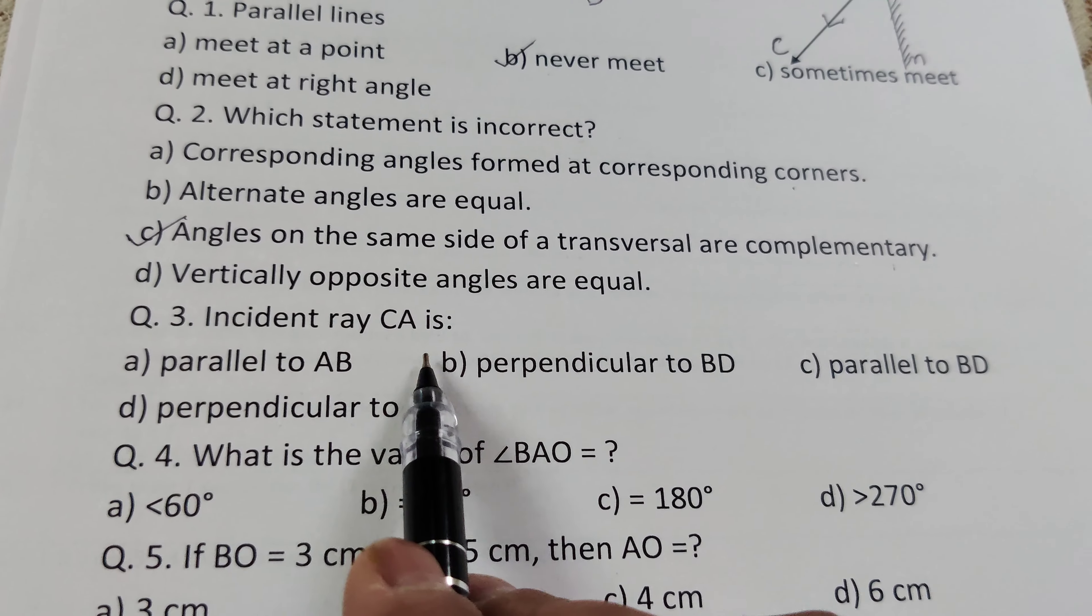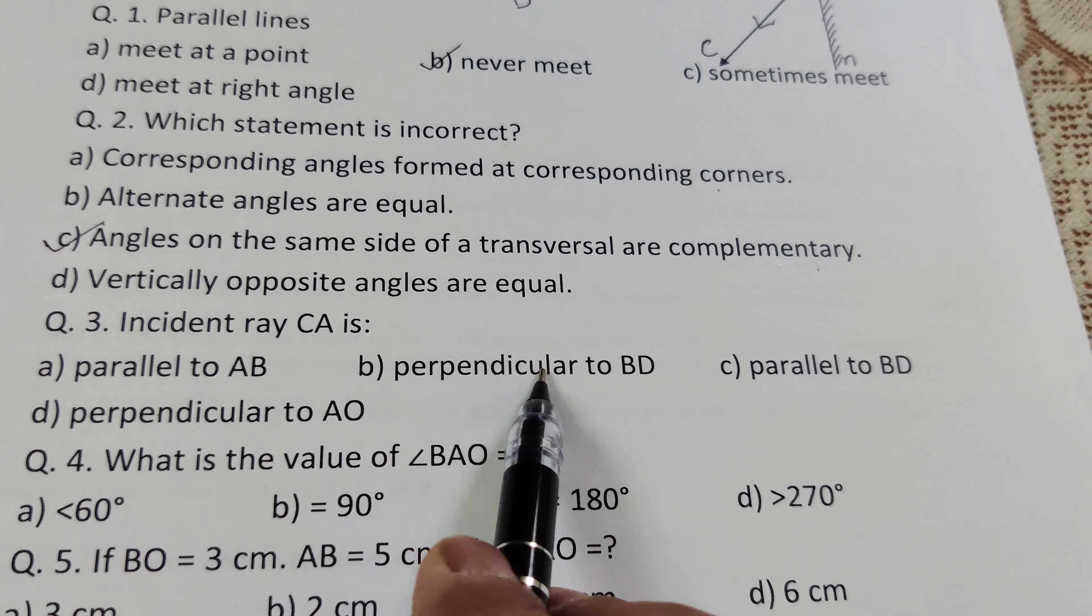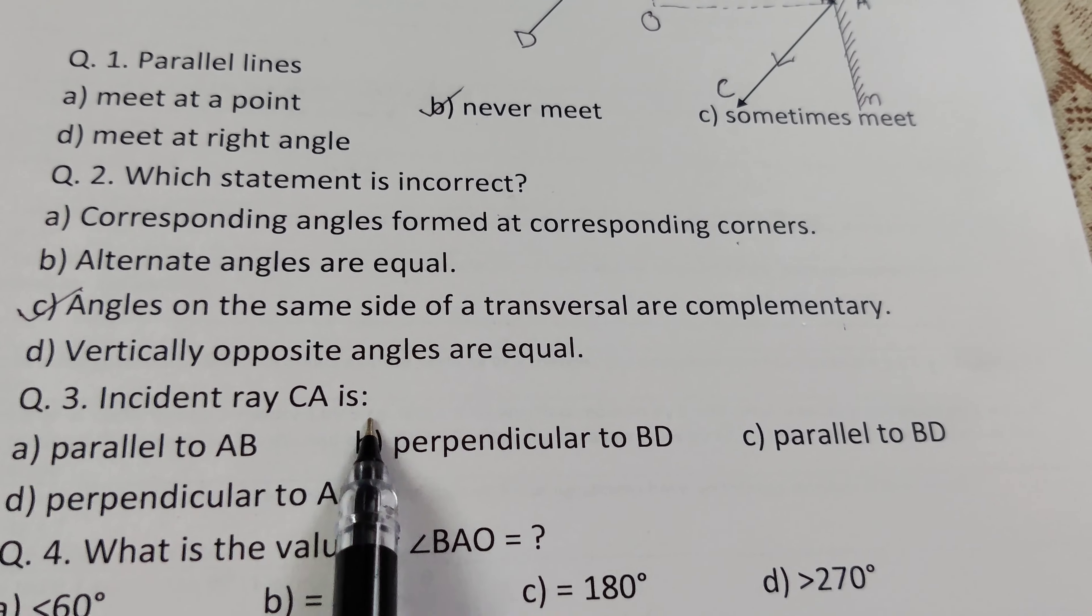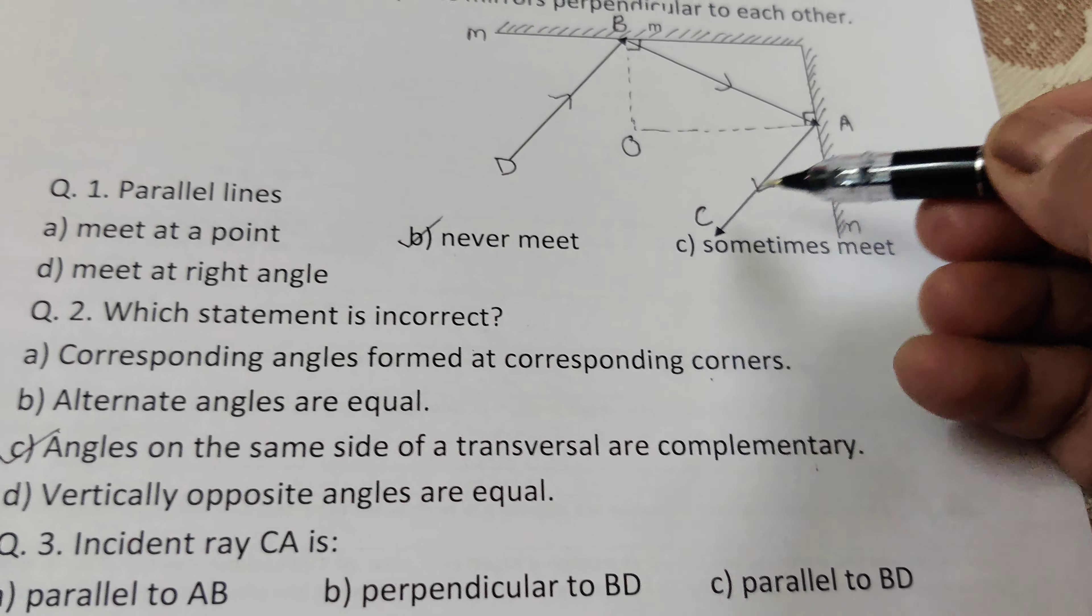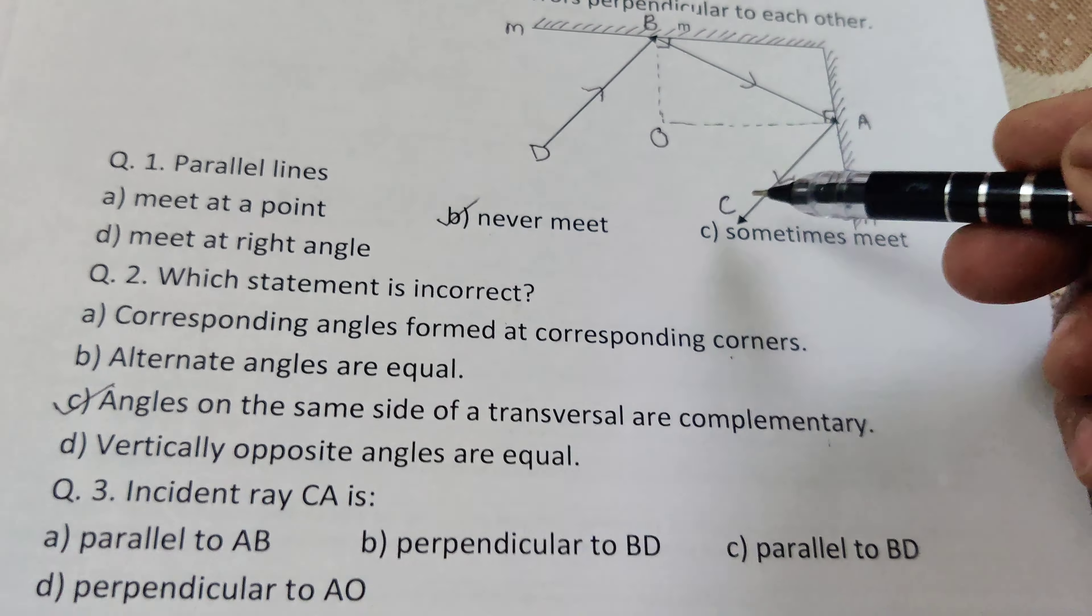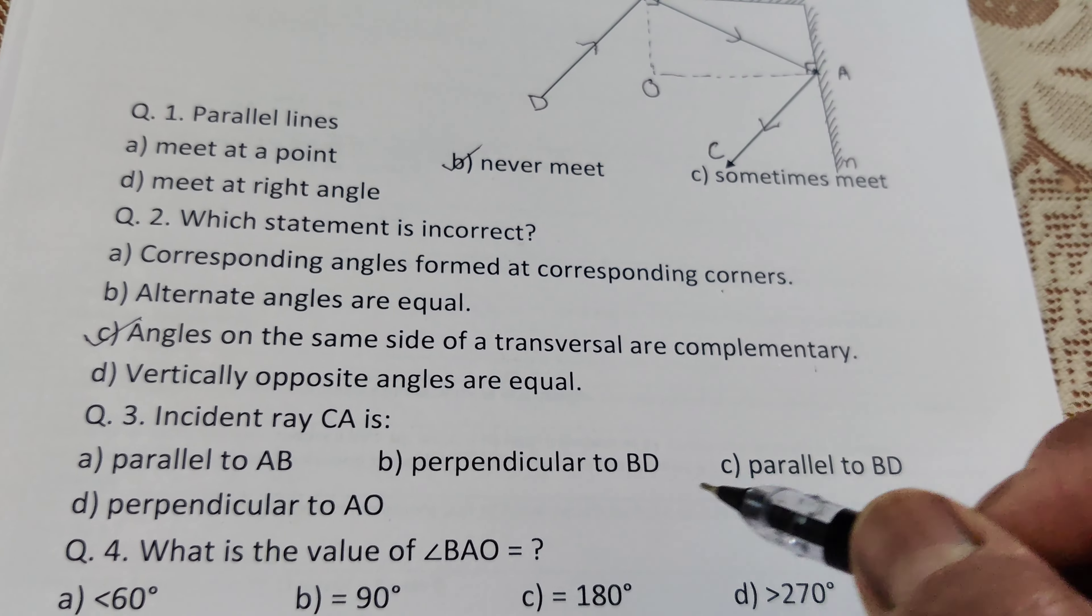The third question: incident ray CA is a) parallel to AB, b) perpendicular to BD, c) parallel to BD, d) perpendicular to AO. Incident ray CA is parallel to BD. CA and BD are parallel, parallel to BD.